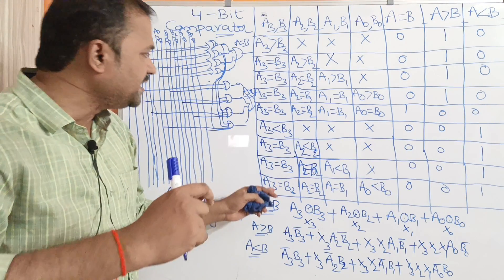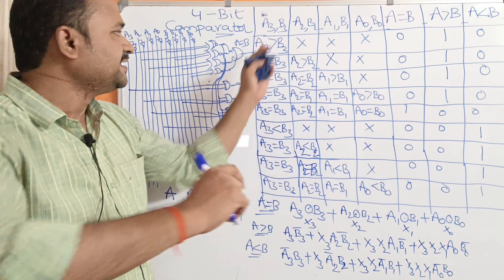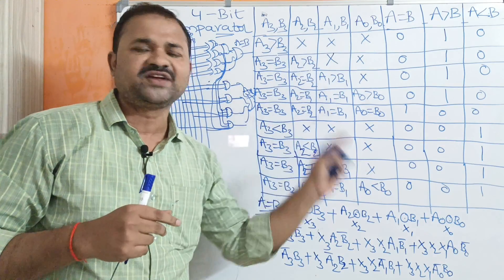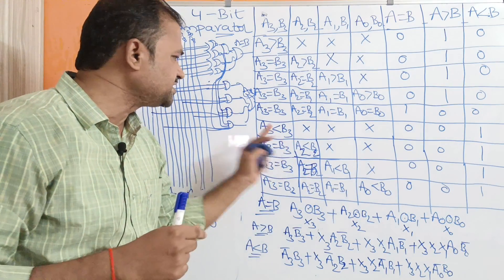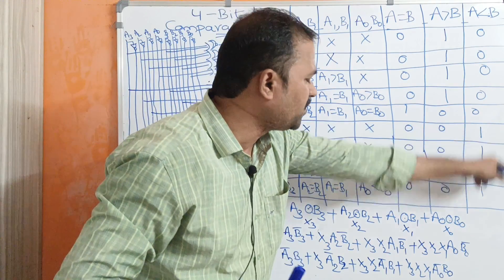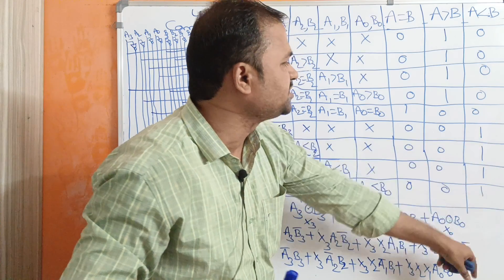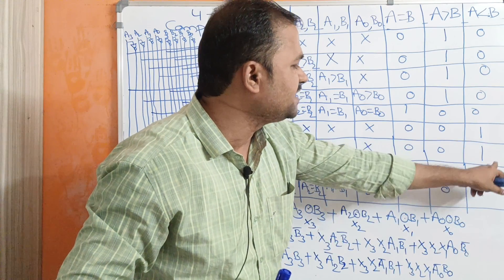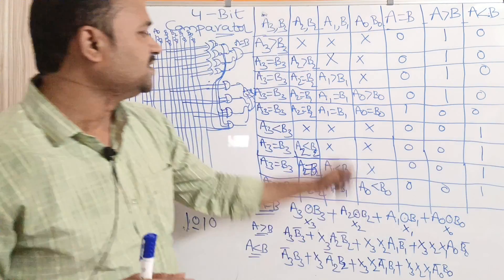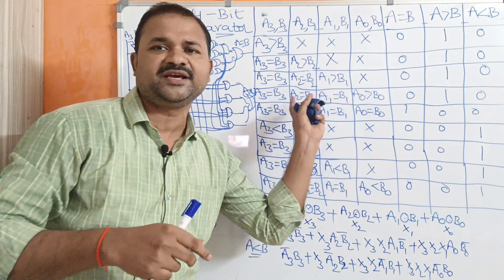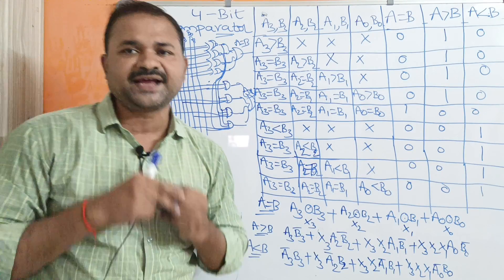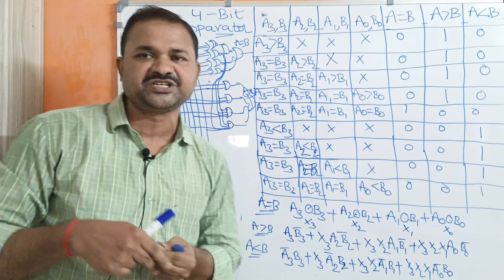The next four rows are just like the greater than cases, but in place of greater than we replace with less than. So there are four cases where the A less than B output is 1. Now let us derive the expressions.